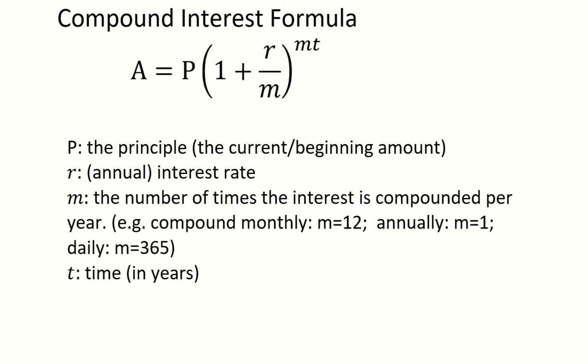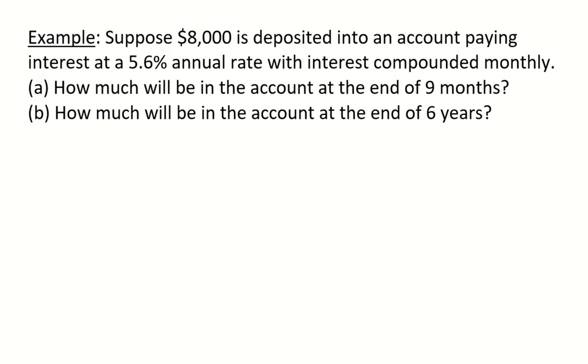T in the formula represents time, and usually we will use the unit of years. Finally, A represents the future amount after time T. Let's look at one example.